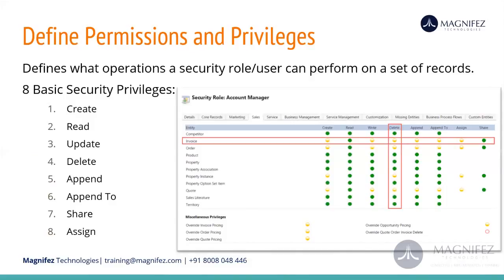Let's talk about privileges or permissions. In a CRM system, we have eight predefined privileges — this is not going to change. The eight privileges are: create, read, update, delete, append, append to, share, and assign. Apart from append and append to, you will be familiar with all of these — they are very obvious. These are the operations a user can perform on a record.